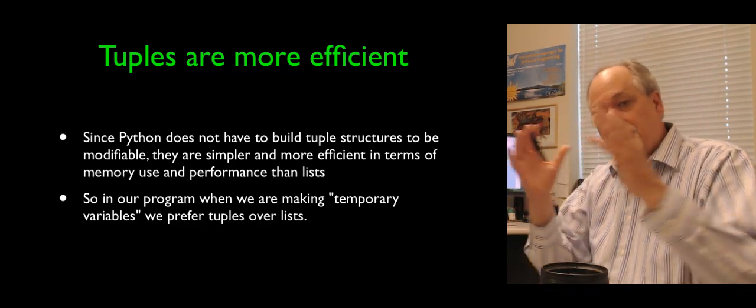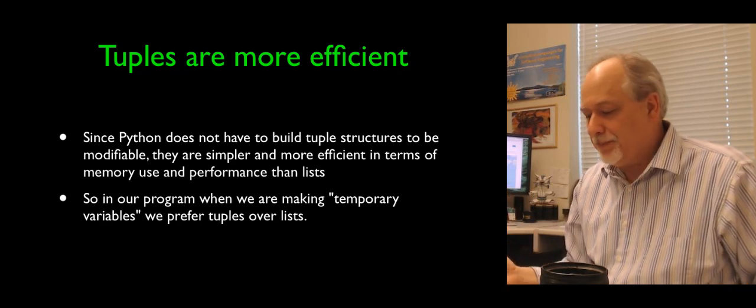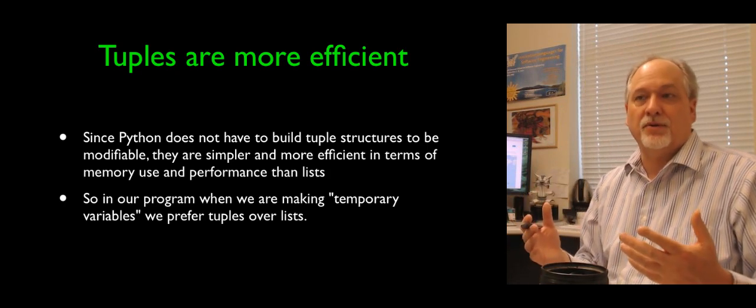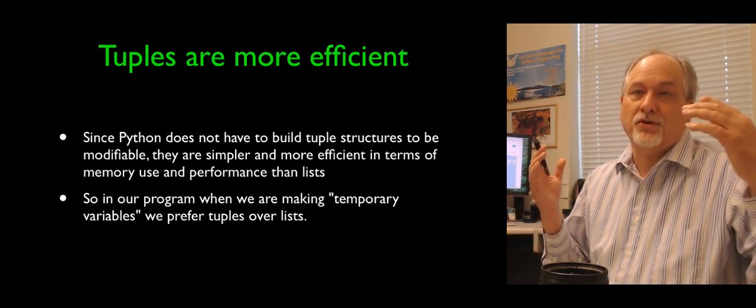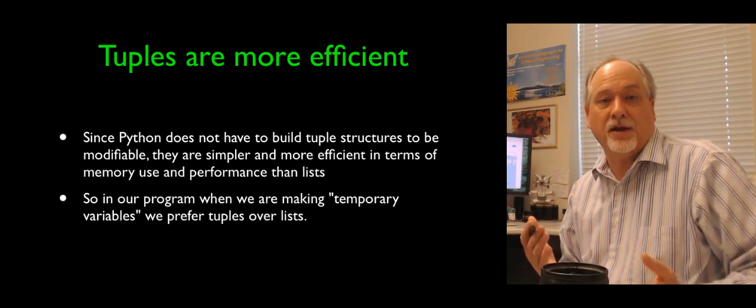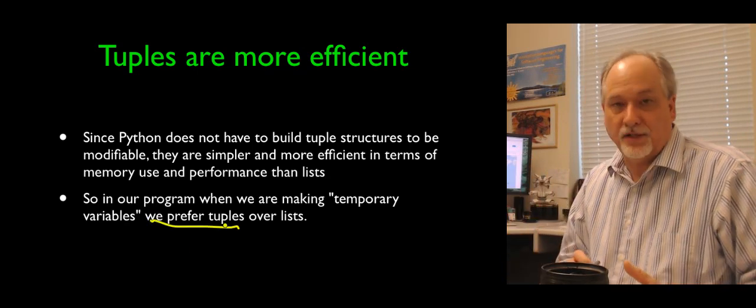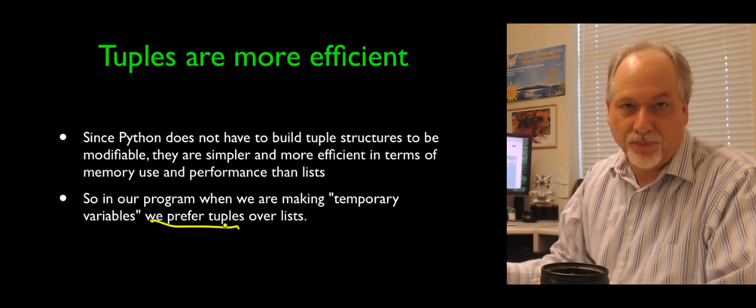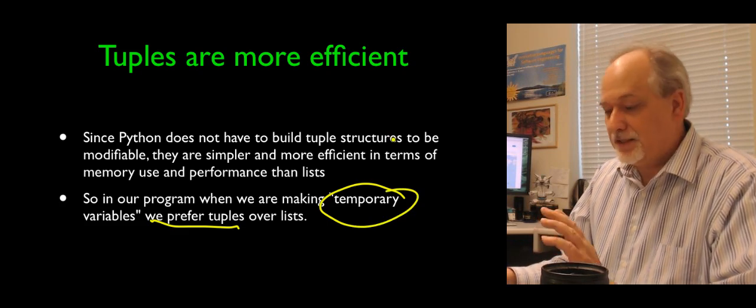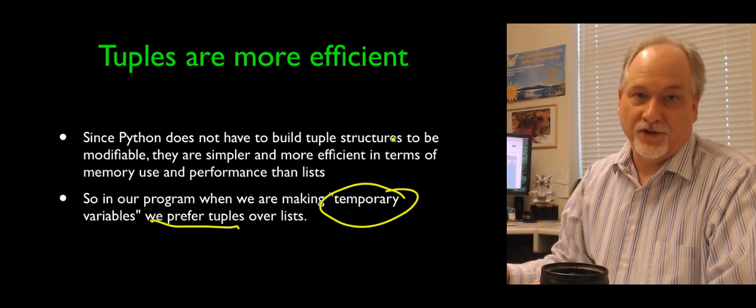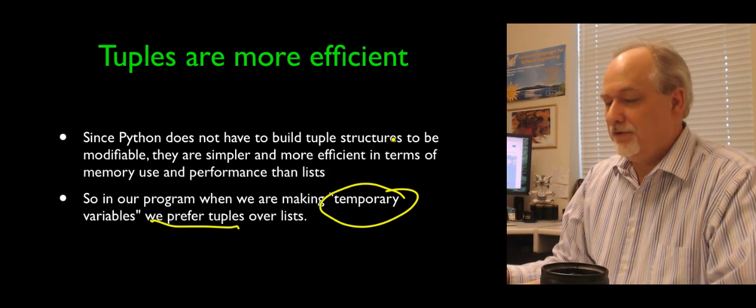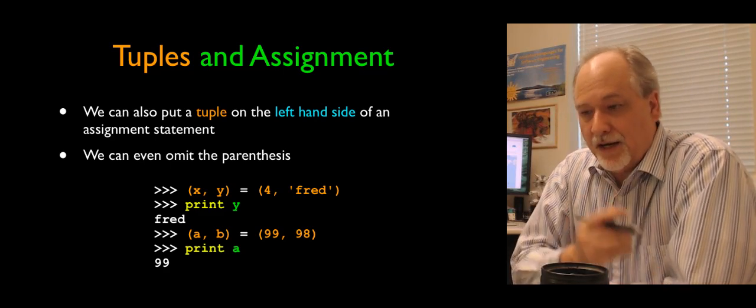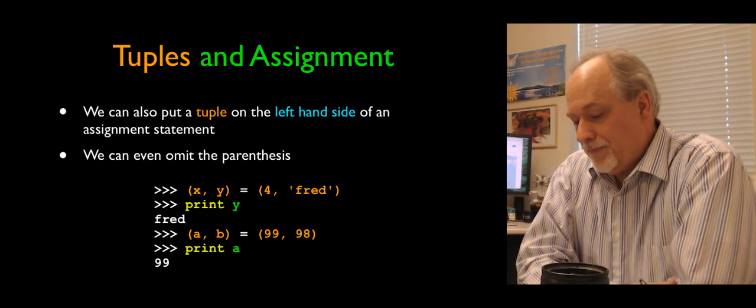So when would you use a tuple? Well, in particular, if you're going to create some list that you're never changing, we prefer to use tuples. And there's a lot of situations in programming where we create what we think of as temporary variables. And if we're going to create it, use it, and throw it away without ever modifying it, we prefer tuples in those kinds of situations. It's the fact that they're temporary variables. They're like temporary lists because they're efficient. They're quick to make, quick to get rid of, and quick to go through.